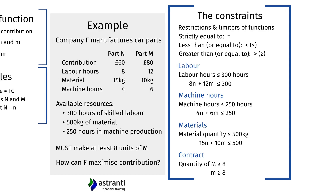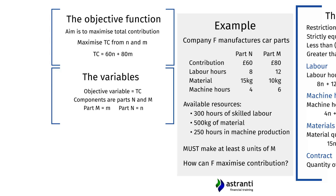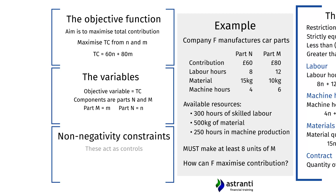There is one more type of constraint to consider — the non-negativity constraint. This acts as a common sense check: it stipulates that we can't make a negative number of our product. We can make 1 unit of Part N or 0 units, but not minus 1. Therefore N and M must each be greater than or equal to 0. This just acts as a filter to confirm our answer is sensible.